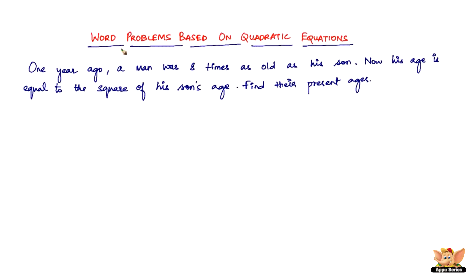In this video, let's continue to solve problems based on quadratic equations. Here we've got a problem based on age. One year ago, a man was eight times as old as his son. Now his age is equal to the square of his son's age. Find their present ages.